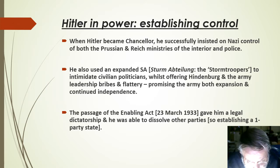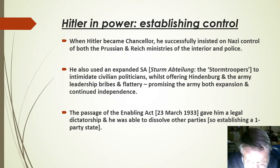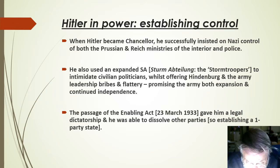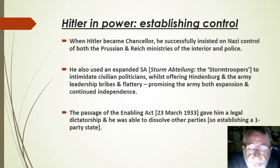When Adolf Hitler became chancellor, he successfully insisted on Nazi control of both the Prussian and Reich ministries of the interior and police. He also used an expanded SA — that's the brown-shirted stormtroopers, the Sturmabteilung, his own private militia — to intimidate civilian politicians, whilst offering Hindenburg and the army leadership bribes and flattery, promising the army both expansion and continued independence. Very significantly, in March 1933 he secured the establishment of the Enabling Act, which gave him a legal dictatorship, and he was then able to dissolve other political parties and effectively create a one-party state.